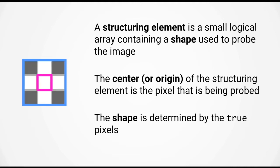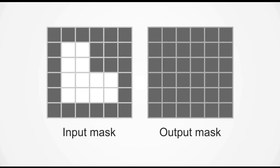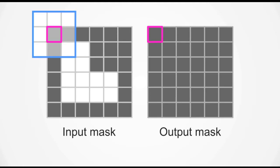We could also have a cross shape such as this. On the left is the input mask, which is an L-shape, and on the right is the output mask, which is currently blank. The way morphological operations work is you take the structuring element and overlay the origin over each pixel of the input mask. The true pixels of the structuring element are then compared with the pixels of the input mask underneath it, and the corresponding pixel on the output mask — indicated in magenta — will be changed depending on this comparison.